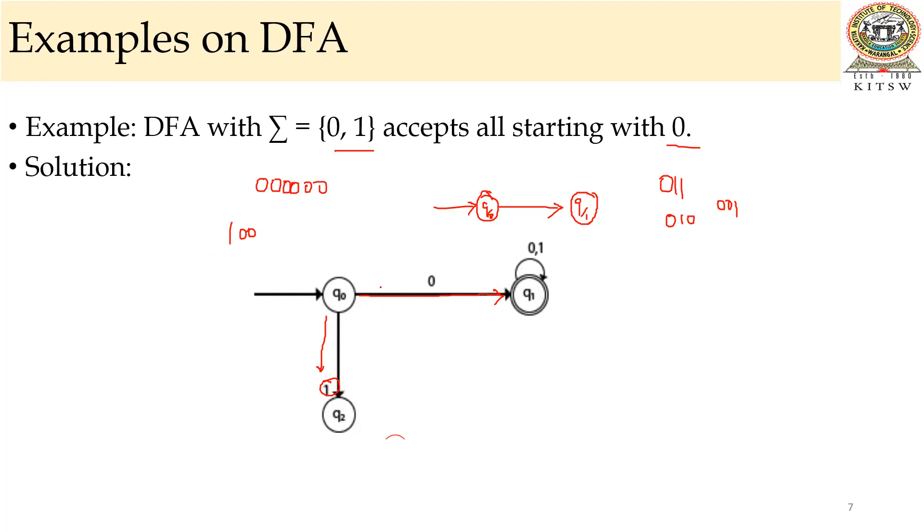If it is 0, 1, 1, then it will go to the final state, 0 or 1. This kind of states are called as a dead state. Dead state, you can also call it as trap. In this way, you can construct DFA.